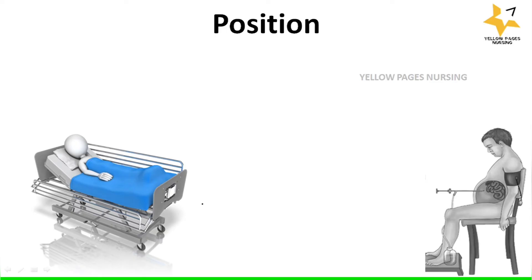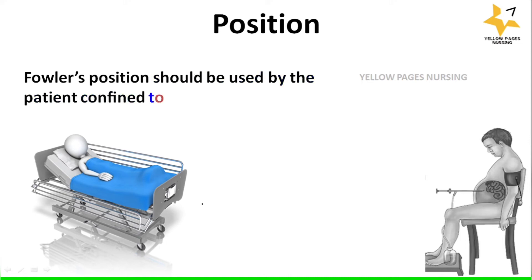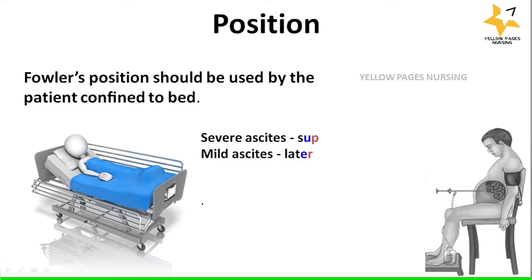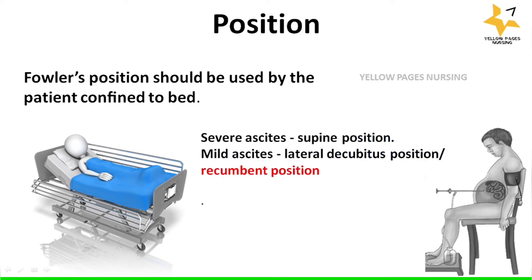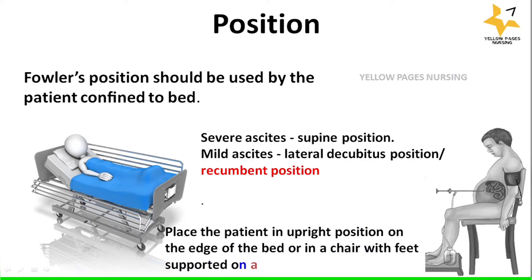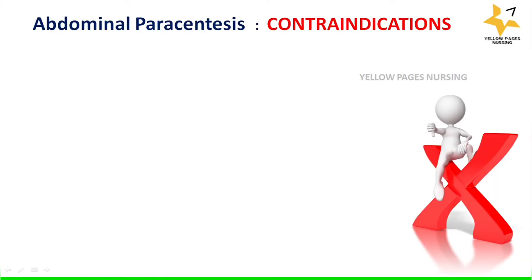What is the position required for patients undergoing abdominal paracentesis? In severe ascites, the supine position is used, and in case of mild ascites, lateral decubitus or decubent position is used. Alternatively, the patient can also be made to sit on the edge of the bed or on a chair upright with feet supported on a stool.